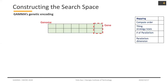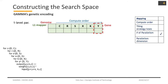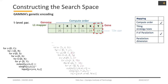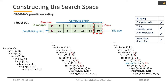Our work is Gamma, a genetic algorithm-based algorithm. In a genetic algorithm, we use genetic encoding to encode the search space. For each individual, we will have a genome and gene. We want to use the genome to cover the full aspect of the mapping. This is a one-level parallelism, which we call the L1 mapper. We encode the compute order at the first row, the tile strategy at the second row, and the parallelism dimension at the first gene, covering the whole mapping space.